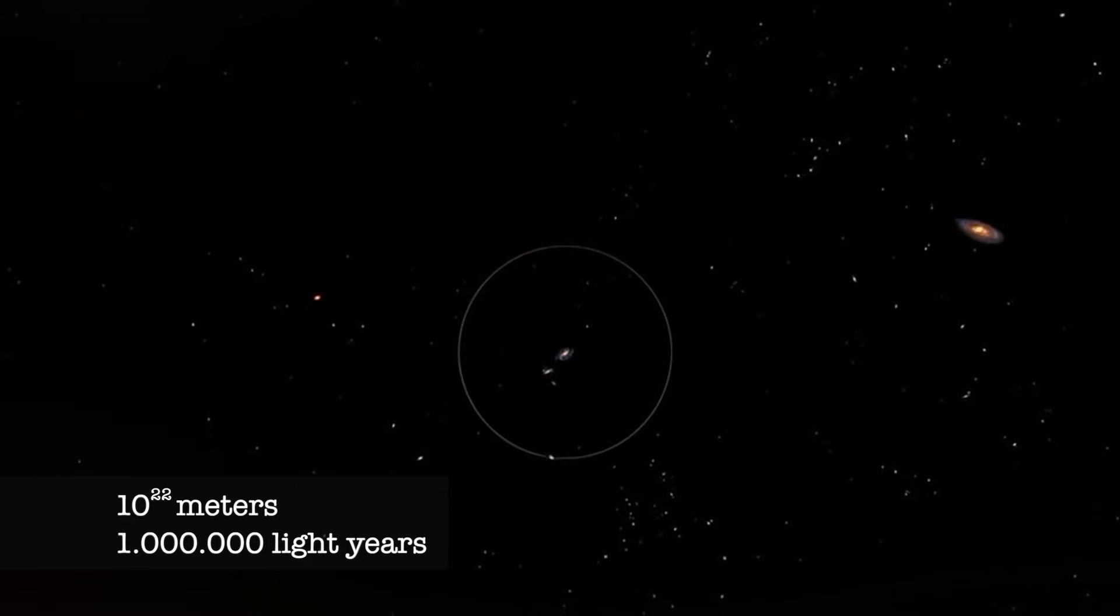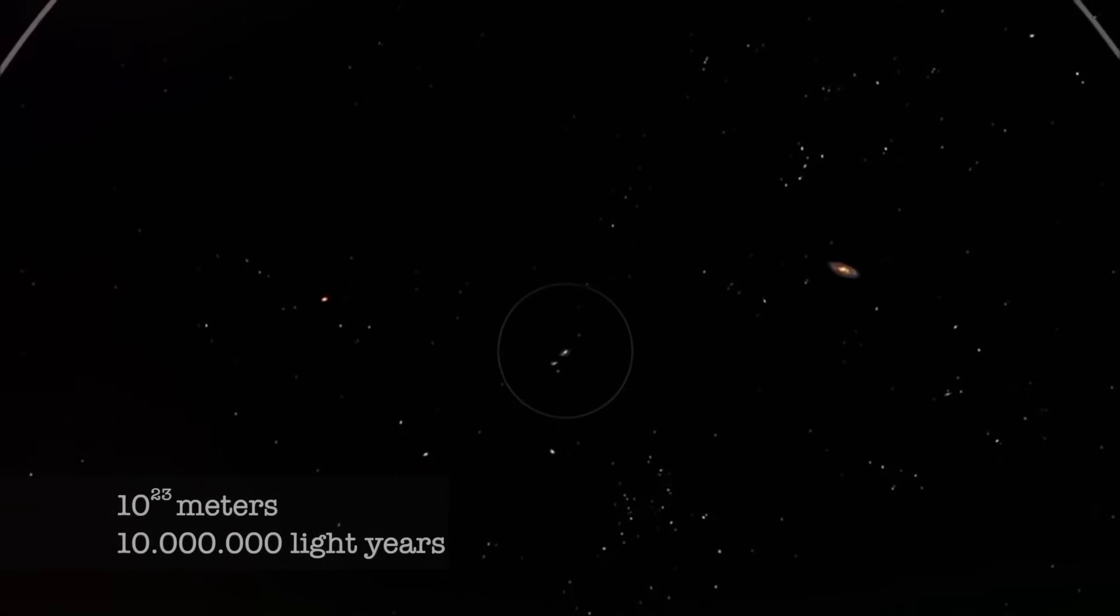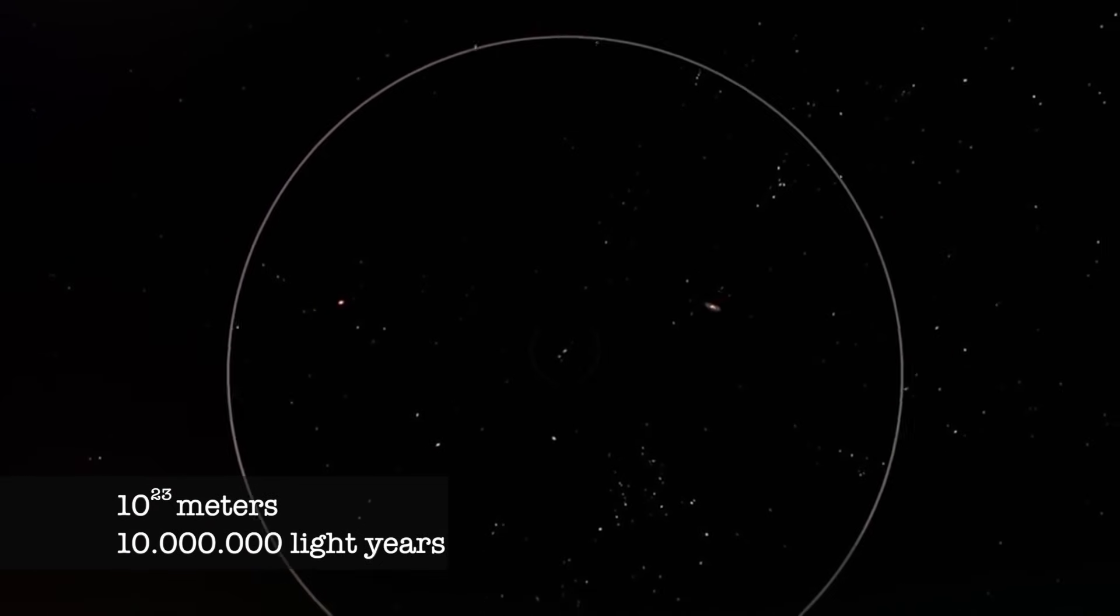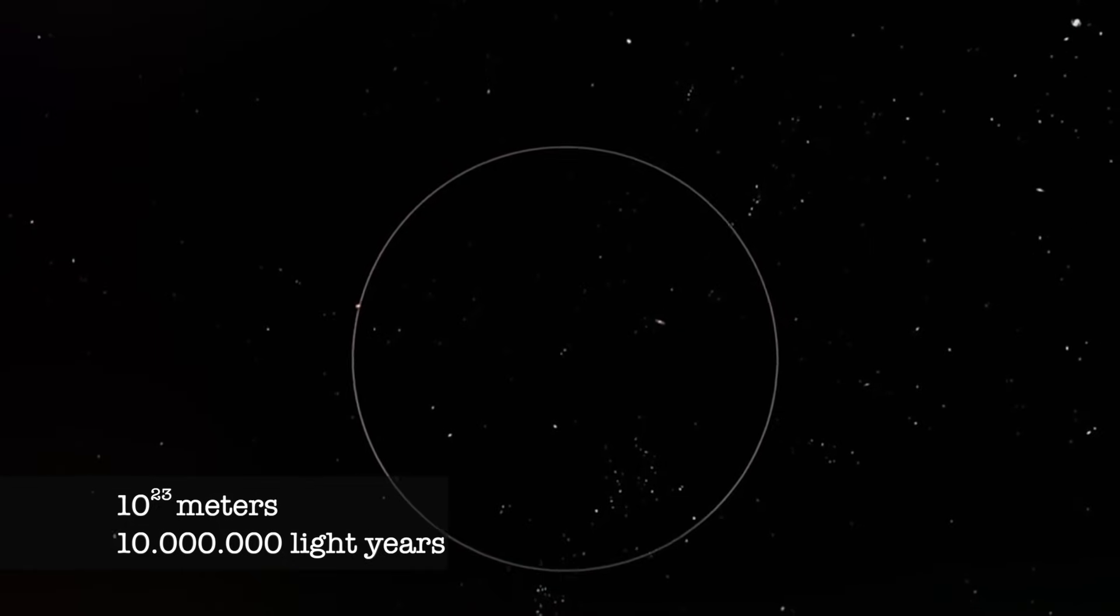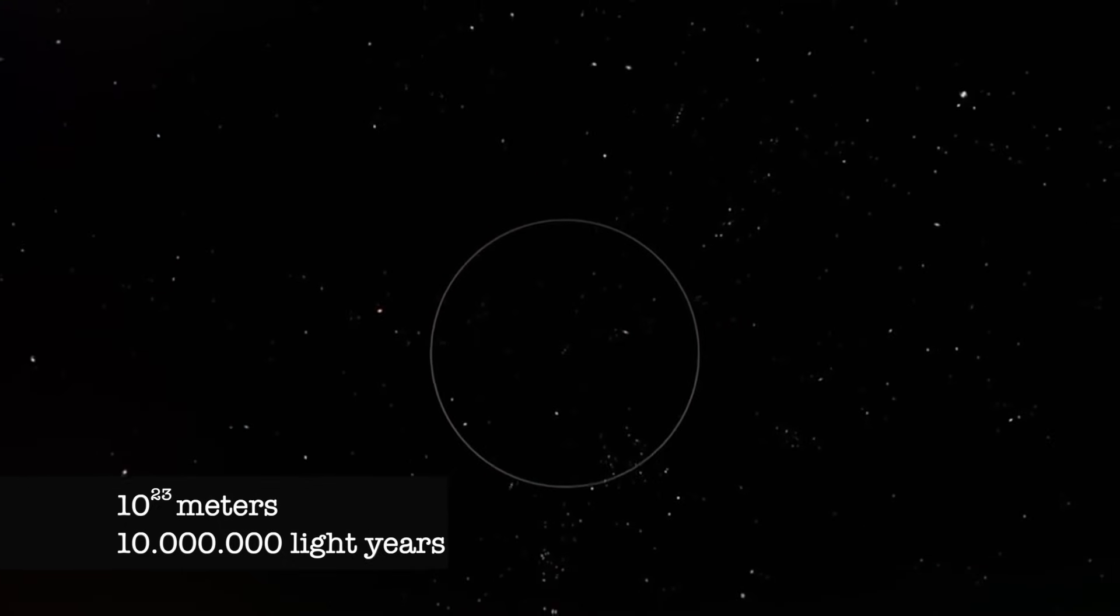At this immense scale, 23 powers of 10, each shining light we see is not a star, but an entire galaxy, composed of countless stars.